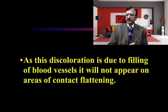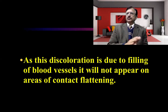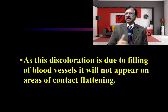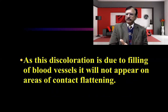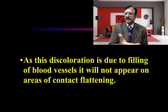As this discoloration is due to filling of blood vessels, it will not appear on areas of contact flattening. When the body is supine, the back of the head, shoulders, buttocks, and calves are in contact with the surface. Those are areas of contact flattening where the weight of the body compresses the toneless capillaries, and therefore post-mortem staining will not be seen there.